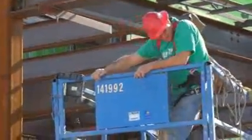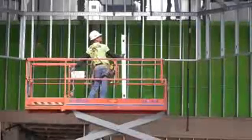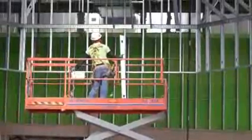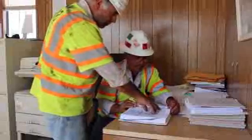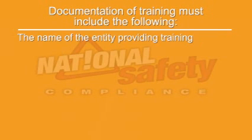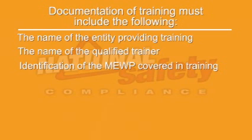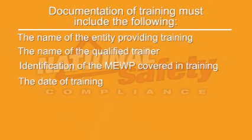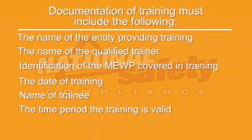Employees must demonstrate competency via testing before operating the MEWP or supervising MEWP operators. Results of both theory and practical training must be documented. Documentation of training must include the following: the name of the entity providing training, the name of the qualified trainer, identification of the MEWP covered in training, the date of training, the name of the trainee, and the time period the training is valid.